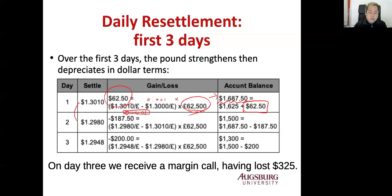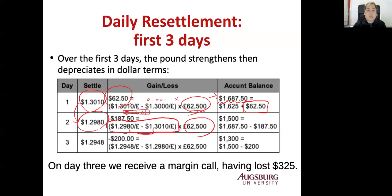On day two, the pound depreciates to $1.2980 from $1.3010, so you lose money in your long position. The difference times 62,500 pounds equals a loss of $187.50, leaving your account at $1,500.